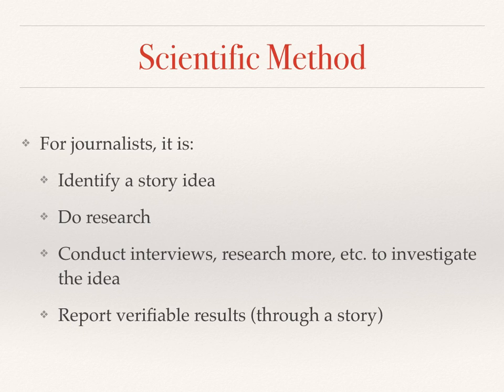While journalists do not need to conduct an experiment per se, they can also use a similar four-step method for researching their articles. The following steps help journalists to investigate their stories: one, identifying an idea; two, doing research on the idea to determine the best way to approach the topic and to learn enough background information about the issue to successfully investigate it; three, conducting interviews, doing detailed research, etc., to investigate the facts associated with the topic and find the truth; and four, reporting the results of the investigation in an article and doing so as transparently as possible.